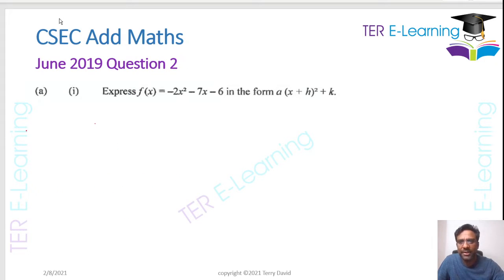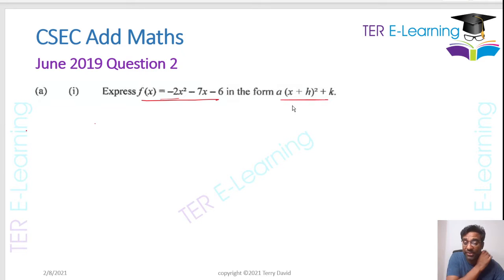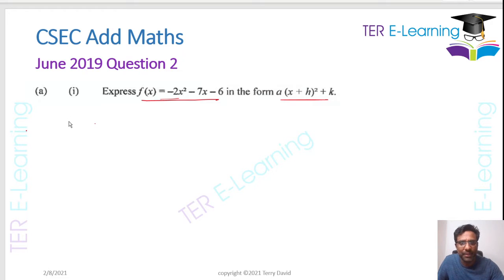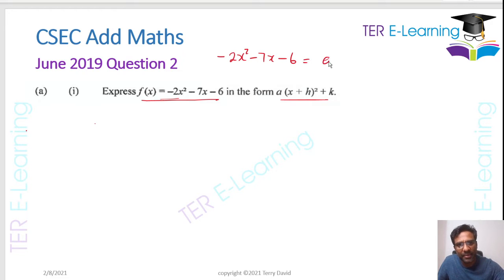So today I'm going to be looking at the June 2019 question 2. In this question, what we have is a quadratic function and we want to express it in a specific format. There are two ways that we can work this — I'm going to show you both methods. So the first method: we want to write this expression, this function, 2x squared minus 7x minus 6.